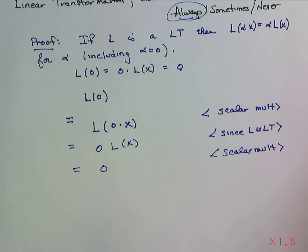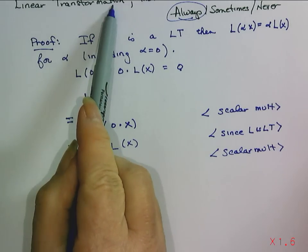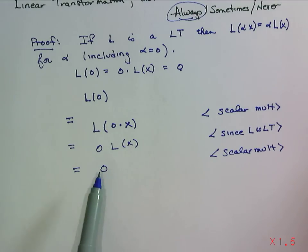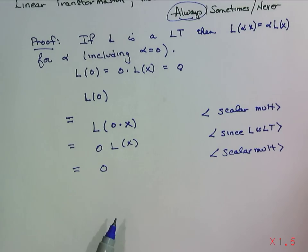So, if L is a linear transformation, then it's always true that L of 0 is equal to 0. And again, there are other ways to prove it, but this is a nice easy one.